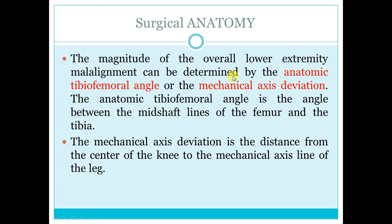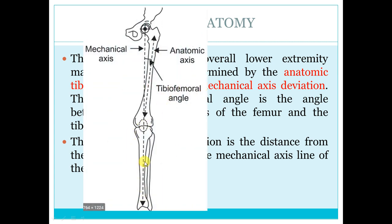Surgical anatomy: this is an introduction to a bigger lecture on coronal deformity — deformity detection and management. The magnitude of deformity can be detected by the anatomical tibio-femoral angle and mechanical axis deviation. The anatomical line of the tibia is the same as the mechanical line of the tibia — you bisect the tibia by taking points on the lateral and medial cortex, connecting midpoints.